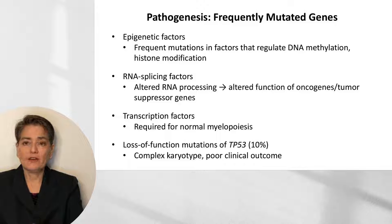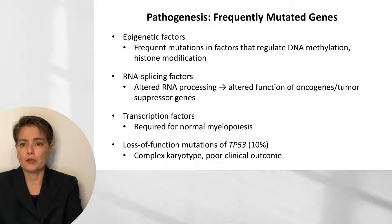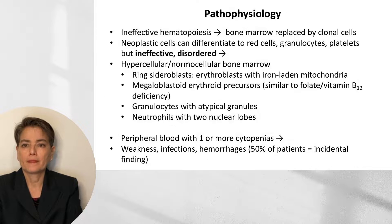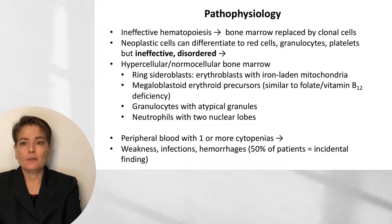MDS pathogenesis involves mutations in epigenetic factors regulating DNA methylation or histone modification, RNA splicing factors causing altered oncogene or tumor suppressor gene function, transcription factors necessary for myelopoiesis, and TP53 loss-of-function mutations in about 10% of cases, leading to complex karyotypes and poor outcome. The bone marrow is replaced by clonal cells that can still differentiate but do so ineffectively. The marrow is typically hypercellular, though normocellular or hypocellular marrow is also seen.